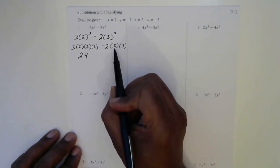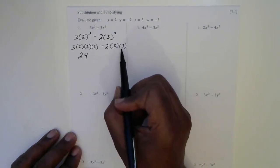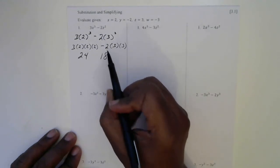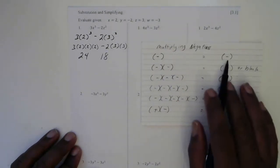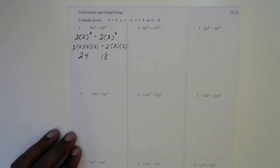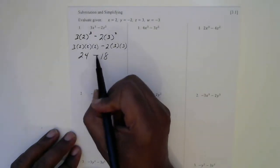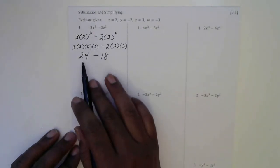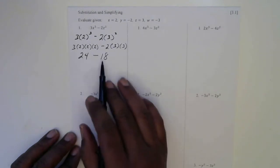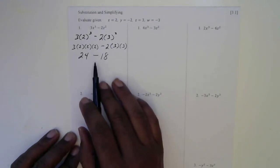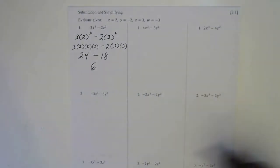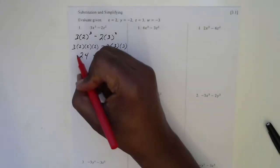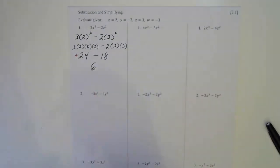Next, we have two times three is six, and six times three is 18. So this would be 18. And this has one negative. The rule is with one negative, we're going to have negative. So let's put negative here. Now these are different signs — a positive 24, negative 18 — so different signs are going to subtract. 24 take away 18 is six. And the bigger sign always wins; the 24 is bigger and it's positive. Therefore, this is a positive six.